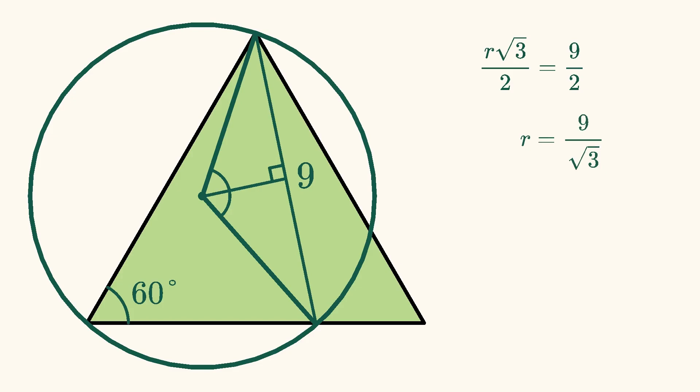Since we're looking for the area of the circle, we'll start by squaring r to find that r squared is 27, which means that the area of the circle is 27 pi.